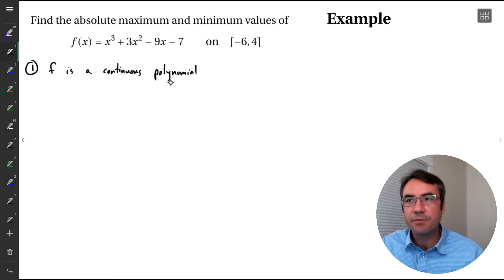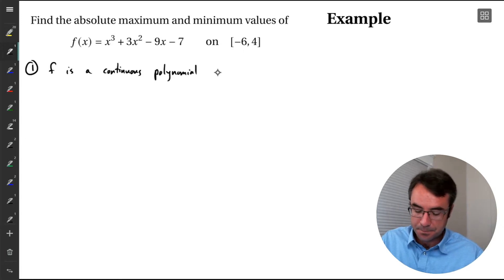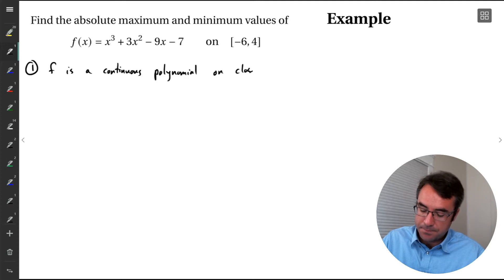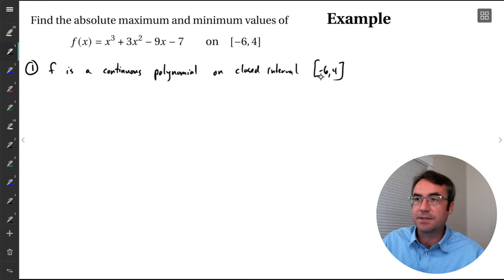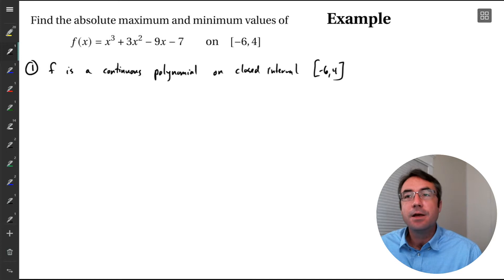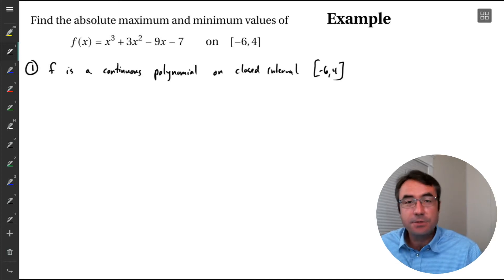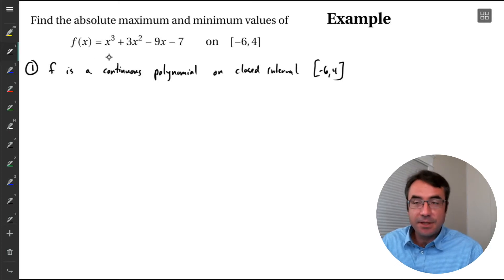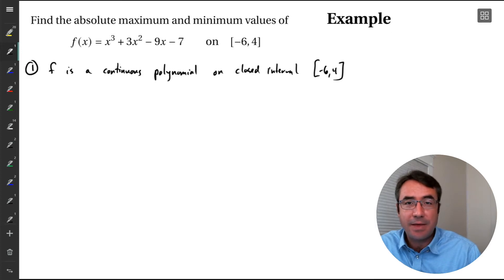There are no jumps or breaks in the graph, and we are talking about a closed interval from negative 6 to 4. We have square brackets to indicate the endpoints are included. So because our function is continuous and we're looking at a closed interval, the extreme value theorem guarantees this function will have an absolute max and an absolute min on that interval.